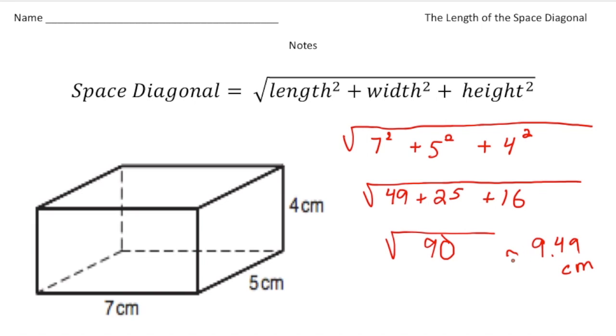And there it is. So really, that's how easy it is to get the space diagonal. If you know the length, the width, and the height, you square the length, you square the width, you square the height, add them together, and then take that number and get the square root of that number, and that's your answer.